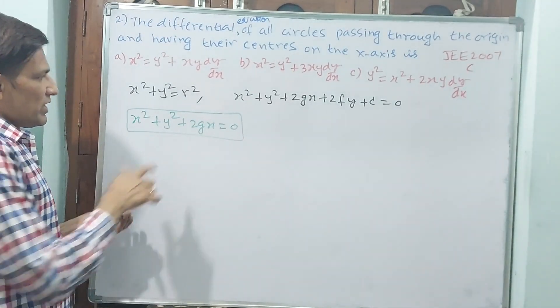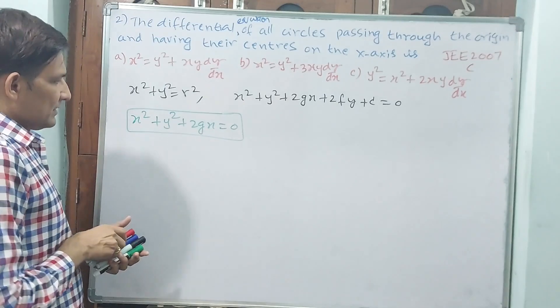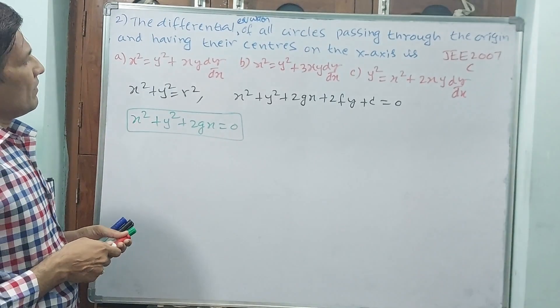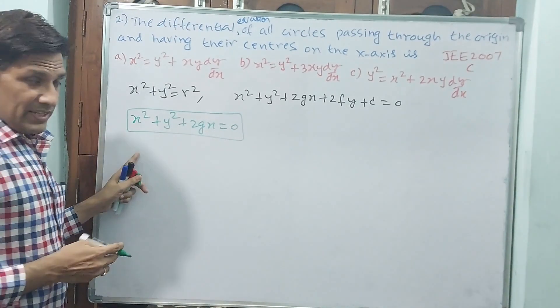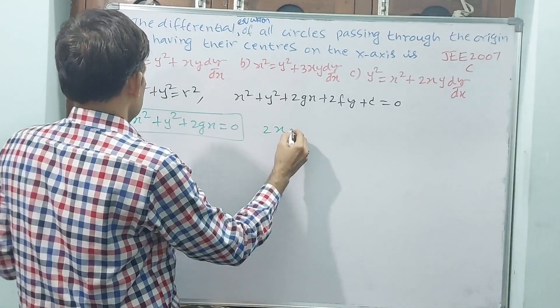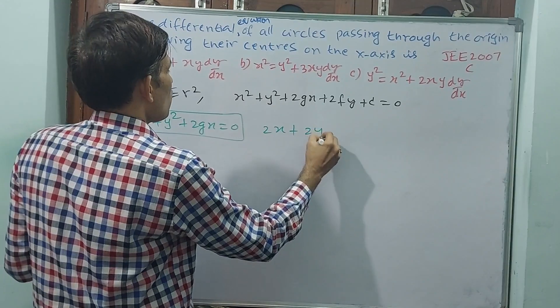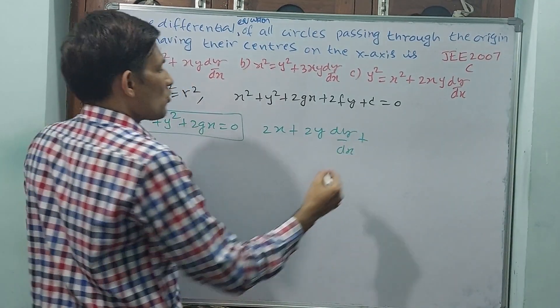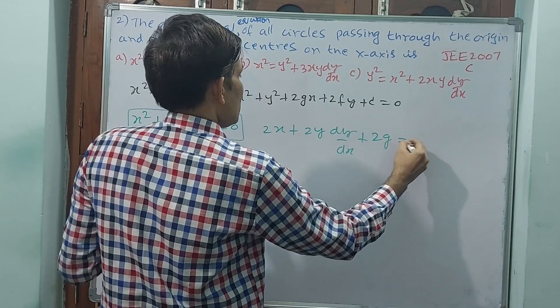Understand? Only x-component will come on x-axis. Okay. Now, differentiate this first. See, 2x + 2y dy/dx + 2g = 0.